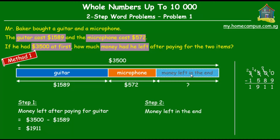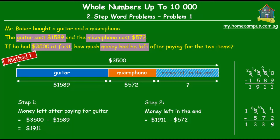Step 2 is to find the money he had left in the end. That would be $1911 — from step 1 — minus $572 which he paid for the microphone. Let's do the working. If you're unsure how to do the subtraction, please check the subtraction tutorial. $1911 minus $572 equals $1339. So the money he had left after paying for the two items is $1339.